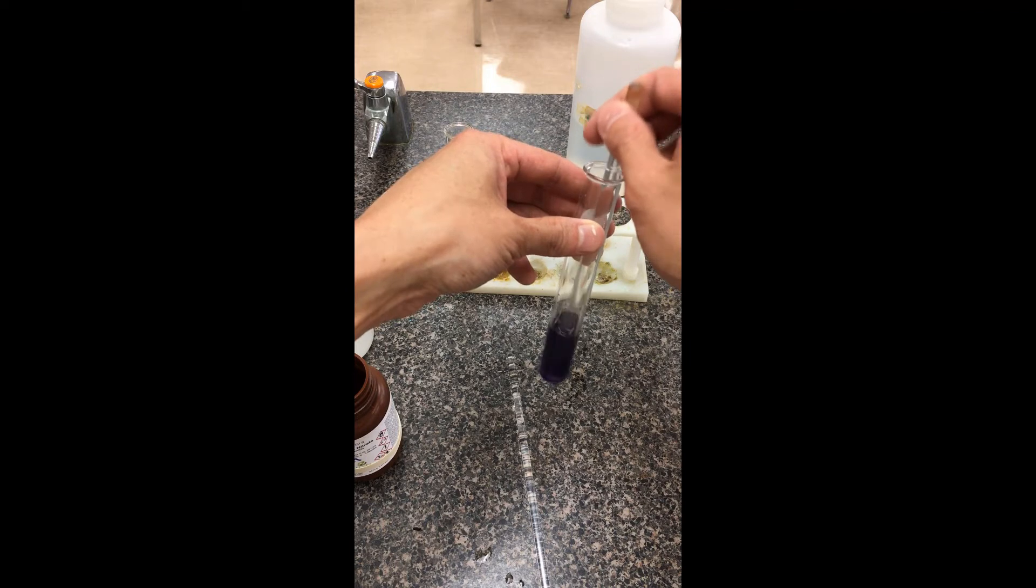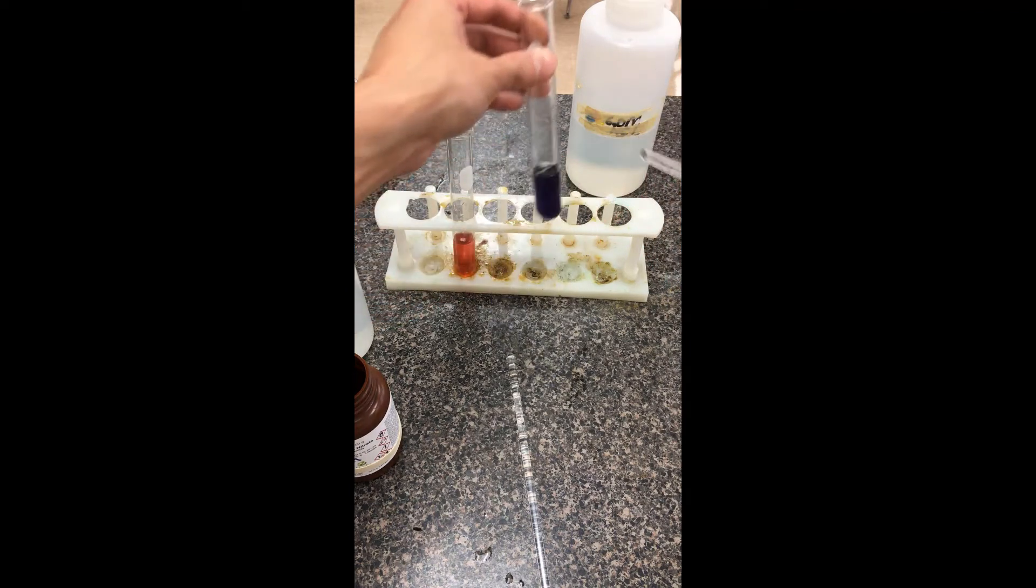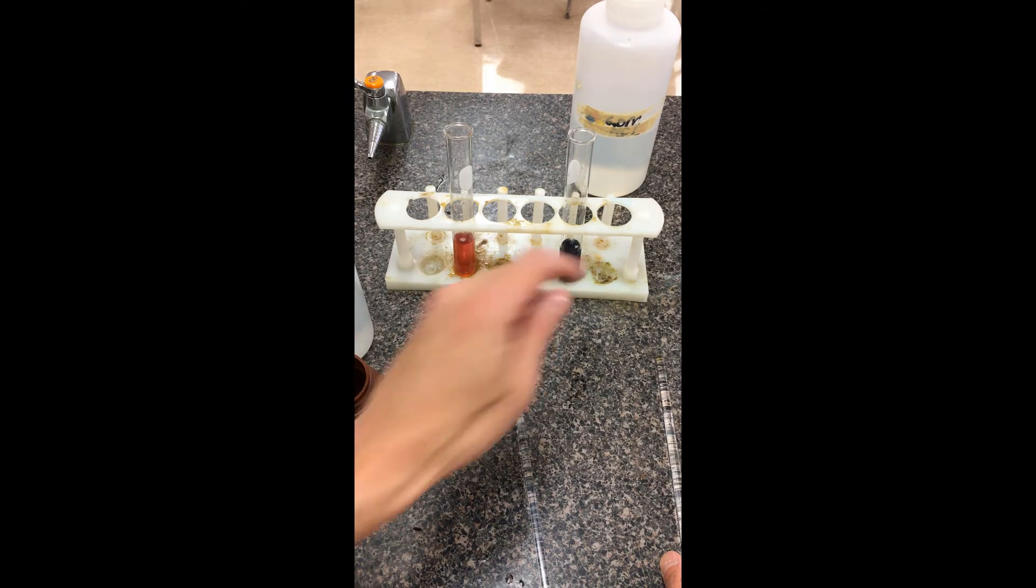You already see a difference between these two. Again this one here was the cobalt ion in water. This is the cobalt ion in hydrochloric acid. And then what we're going to do here is we're going to see if there's a sort of replacement that happens if I now add water to both of these test tubes.